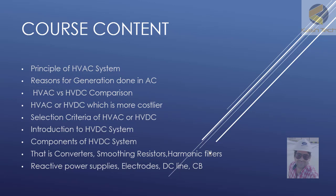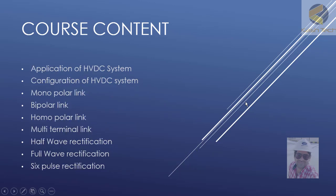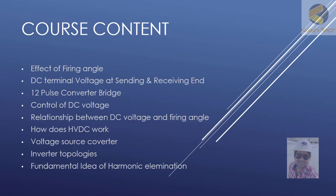Next, I will give you an introduction to HVDC systems and discuss the different components: converters, smoothing reactors, harmonic filters, reactive power supplies, electrodes, DC line, and circuit breakers. We will also discuss applications and configurations of HVDC systems, including monopolar link, bipolar link, homopolar link, multi-terminal link, half wave rectification, full wave rectification, and six-pulse rectification.